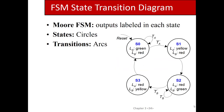This FSM has four states. From a design perspective, how do we know there are four? It has to do with the valid configurations of the lights. There are four valid configurations: a green light on one of the two streets, or a yellow light on one of the two — and in each case, the other street's light is red.